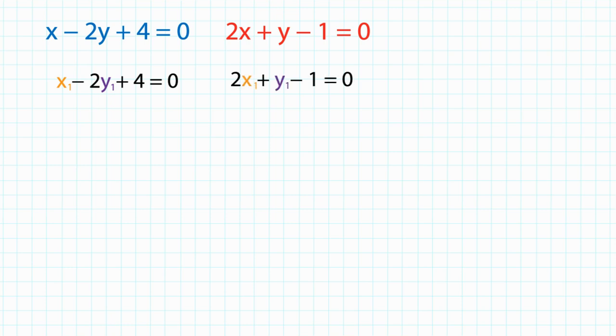Then let's multiply the first equation by 2 to make the coefficient of x1 to be the same. So we get 2x1 minus 4y1 plus 8 is equal to 0, 2x1 plus y1 minus 1 is equal to 0.